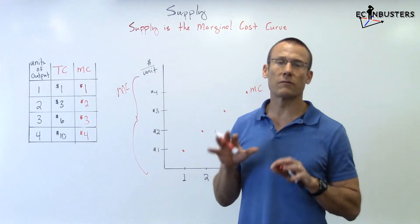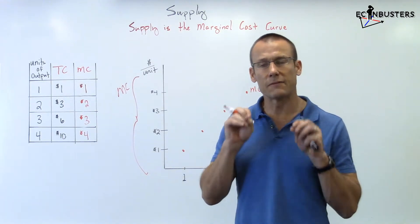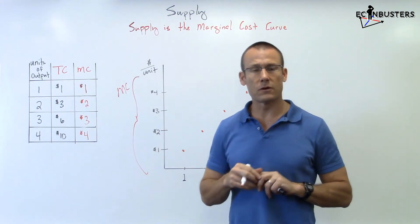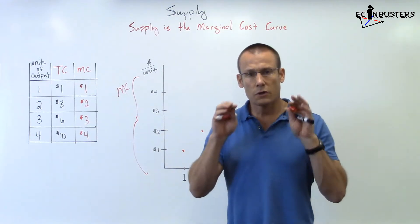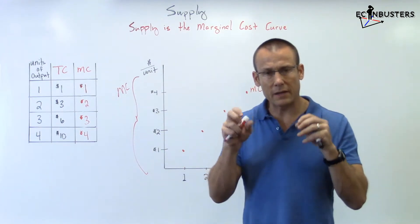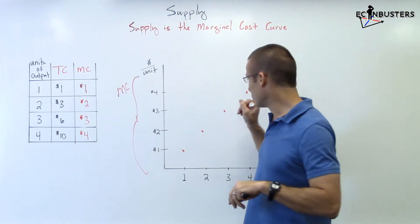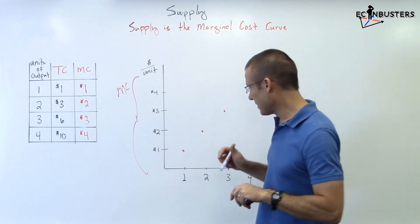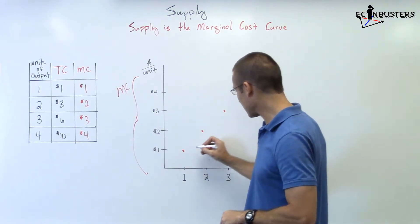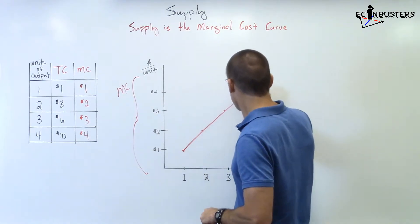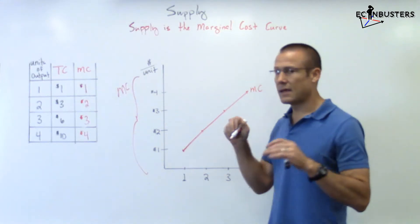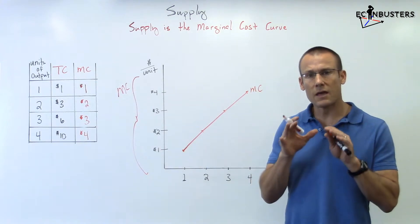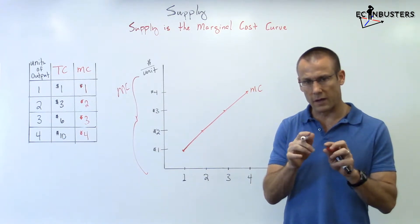Every supply curve, if you zoomed in enough, would be a bunch of dots — and that's true for demand curves too. Zoom into every marginal cost curve and it's also a bunch of dots. But I'm going to connect those dots. And once again, that is the marginal cost curve, and it gives us the supply curve.